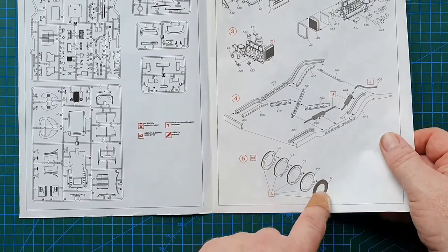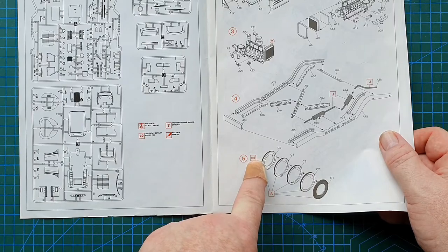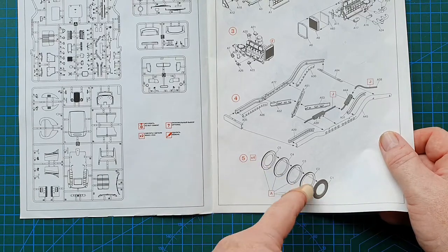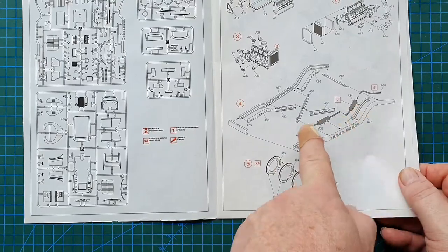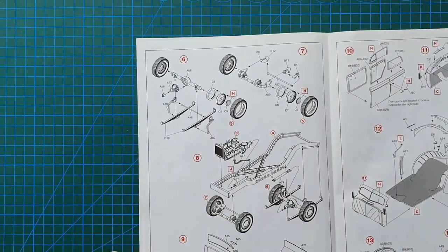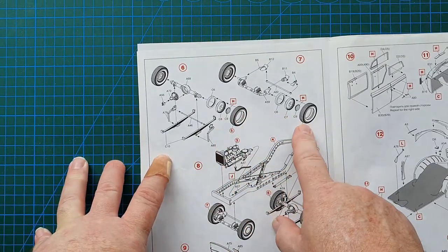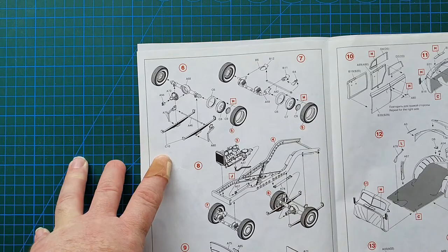And then these are your tyres, made up of five separate parts, to give you a really nice tread pattern. Color call outs as you go. And then once you've got the tyres done.